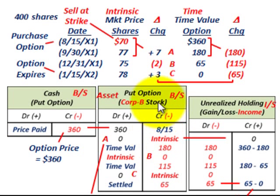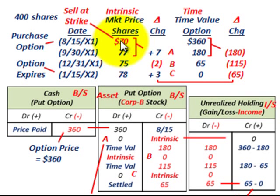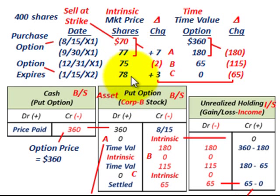For a call option account, the opposite would be true — you'd have a higher strike price than the market price. We didn't go through that example, but the reasoning is the same: in the case of a call option where the strike price is above the market price, you wouldn't record any intrinsic value in your call option account. You'd let it expire at a zero amount. That covers the case where you purchase an option and let it expire.